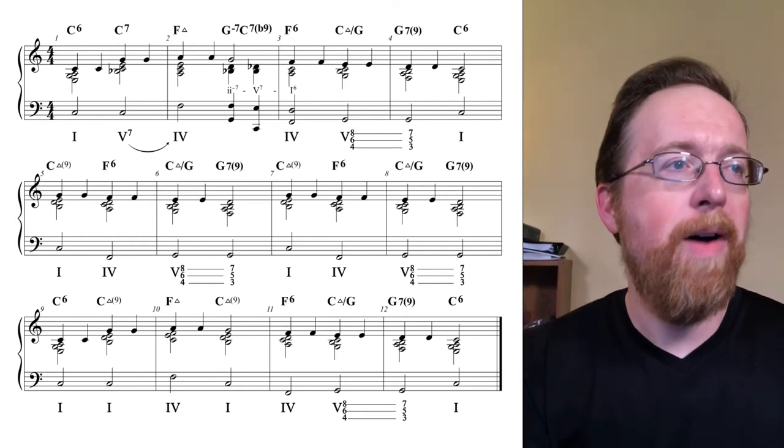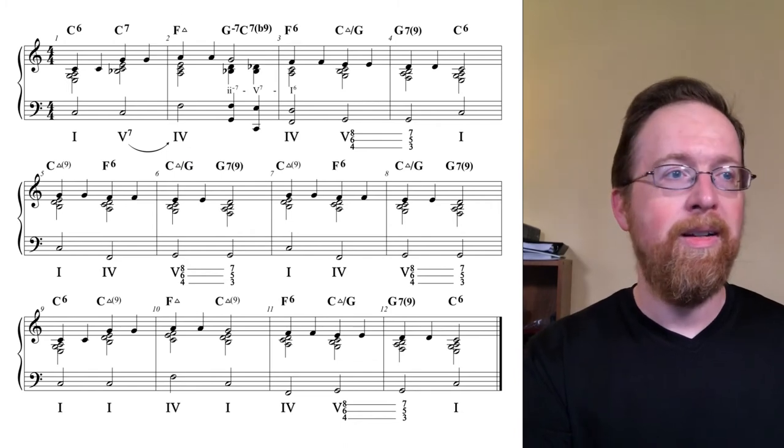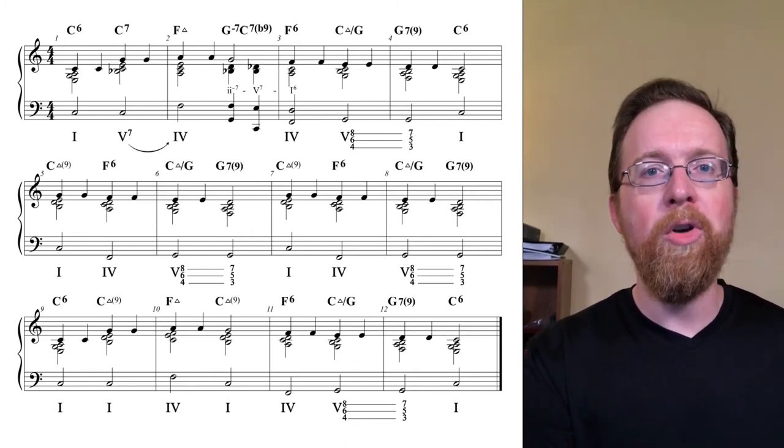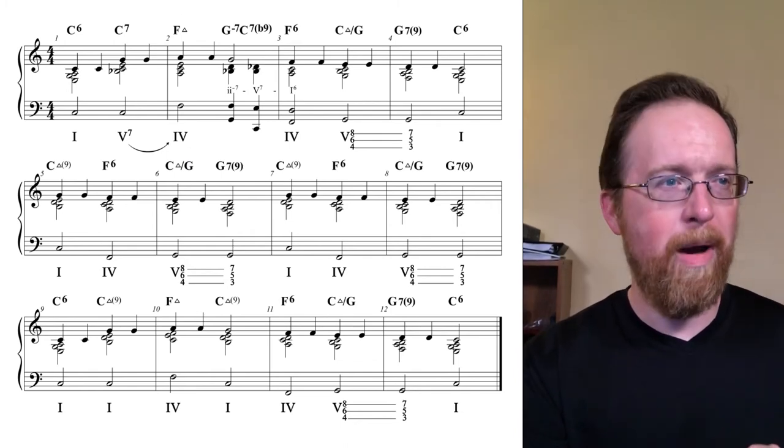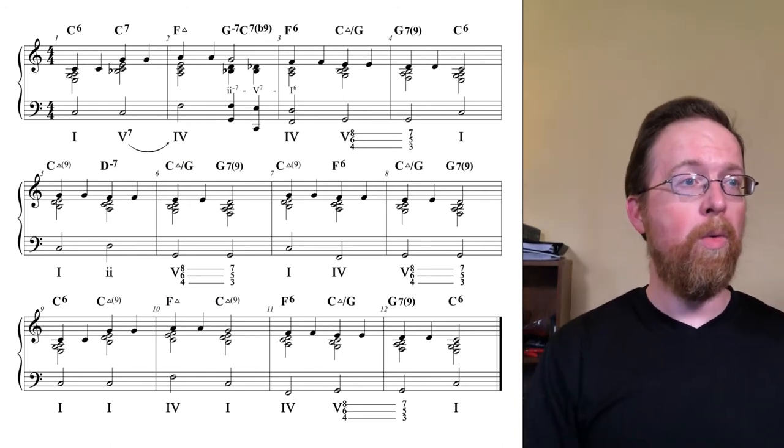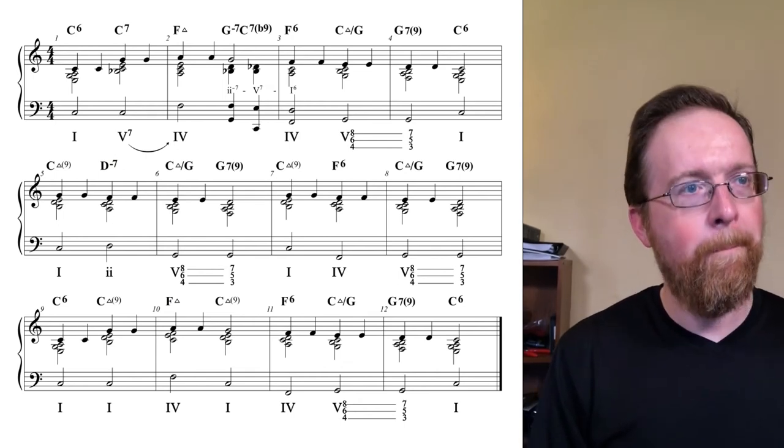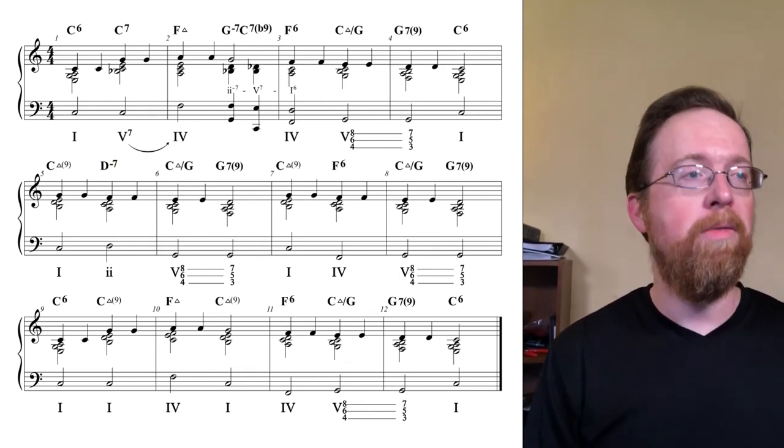In measure five, I'm going to change the bass note from the F in the four chord. I'm going to turn that four chord into a two chord by putting a D in the bass. That'll create a 2-5 progression with measure six. So I had this before, but I'm going to change it so I have this.